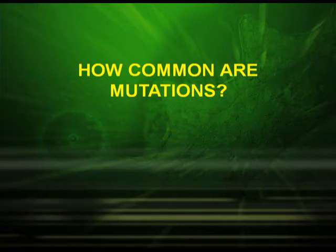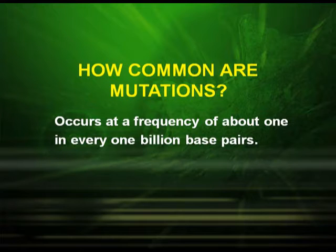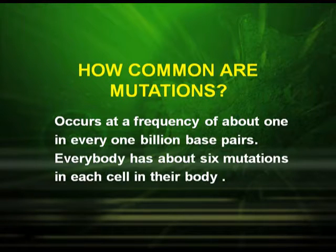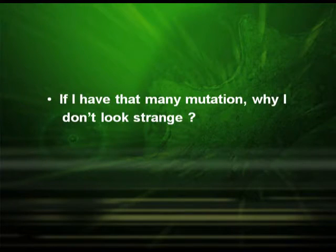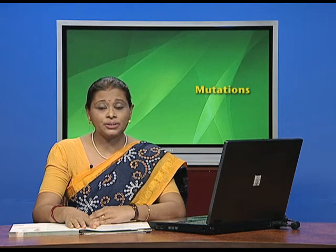Now, another very important question: how common are mutations? You will be surprised to know that these occur at a frequency of about 1 in every 1 billion base pairs, and everybody has about 6 mutations in each cell in their body. Isn't that surprising? You must be having one question in your mind — if I have that many mutations, why don't I look strange? Because these mutations are not always expressed.